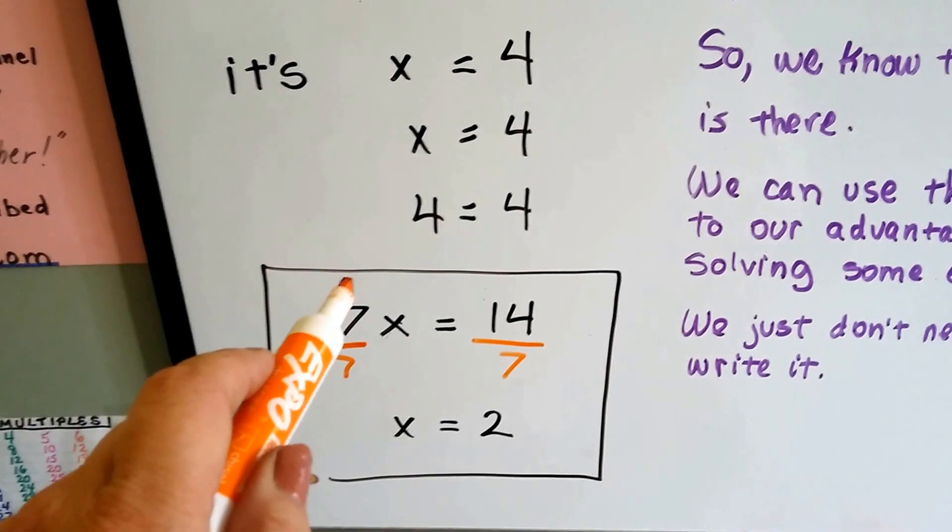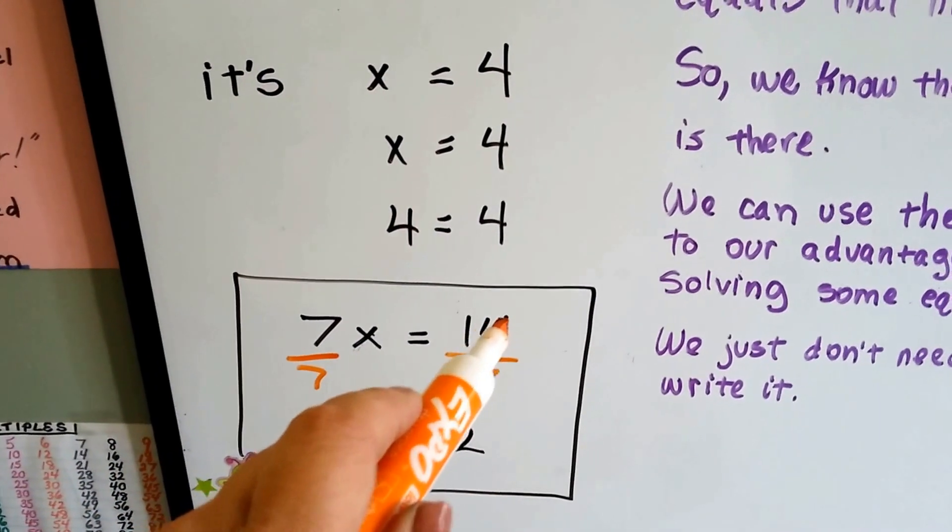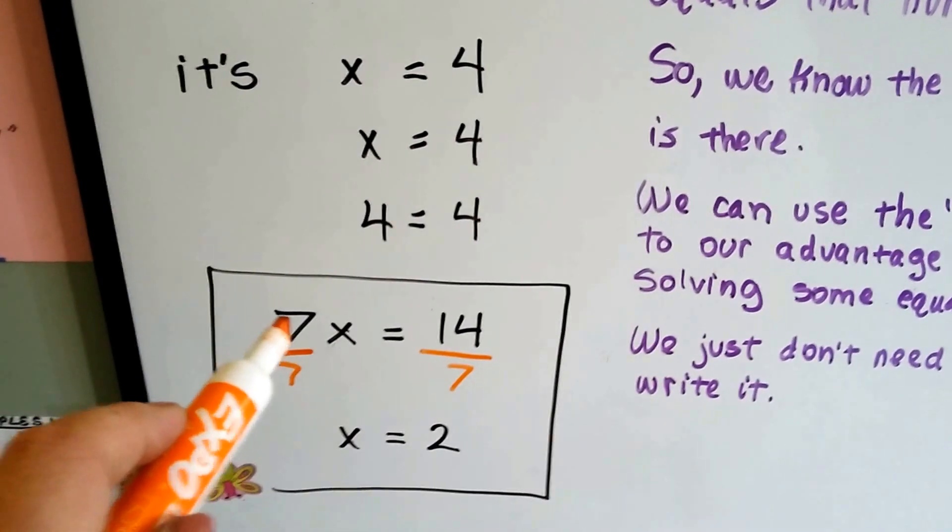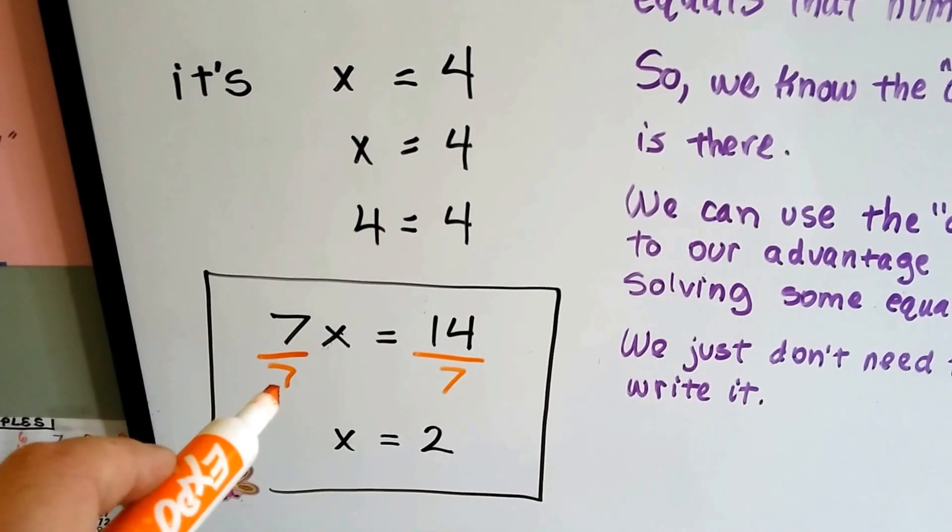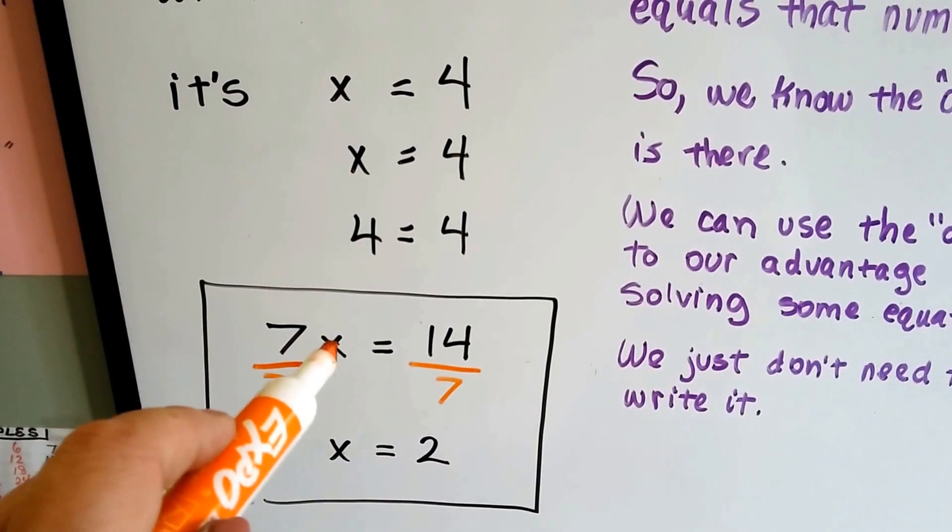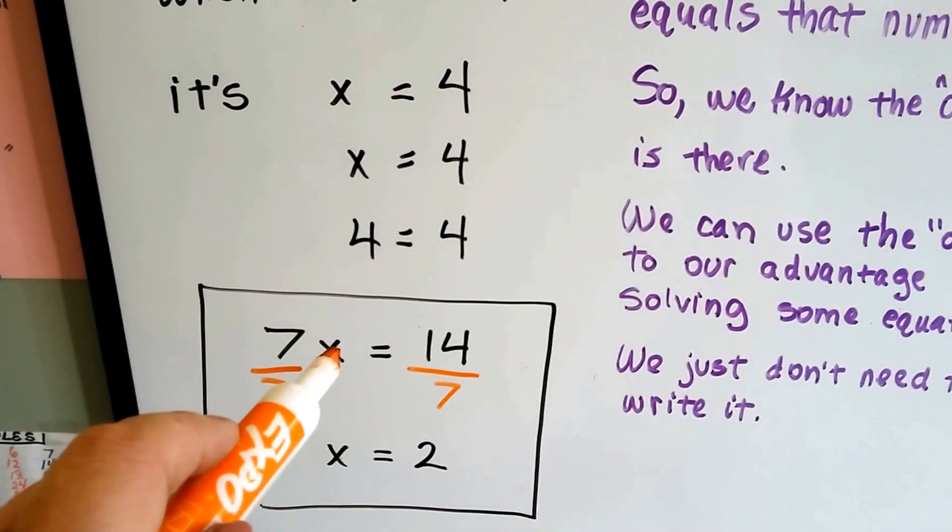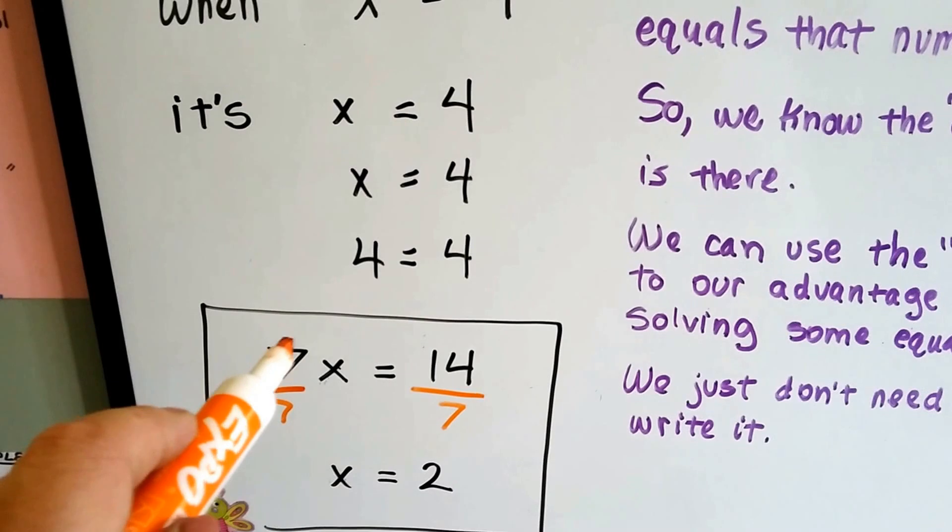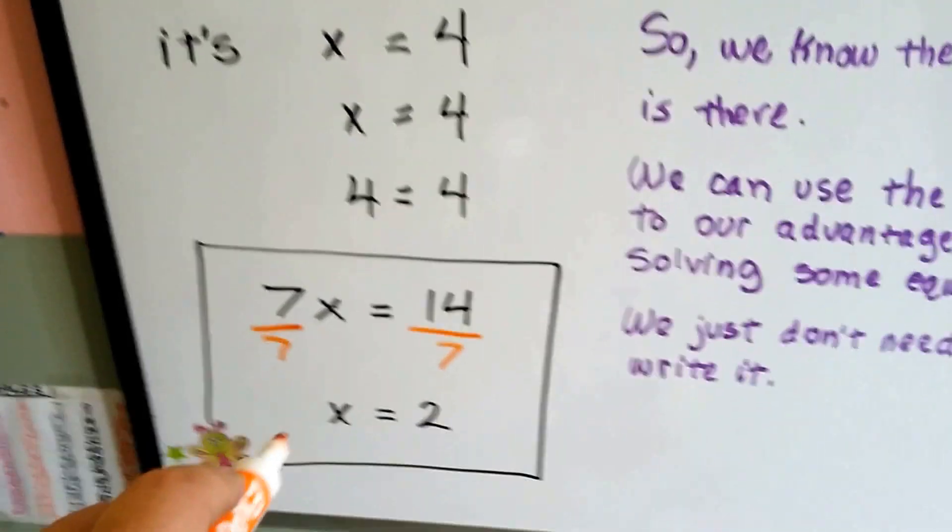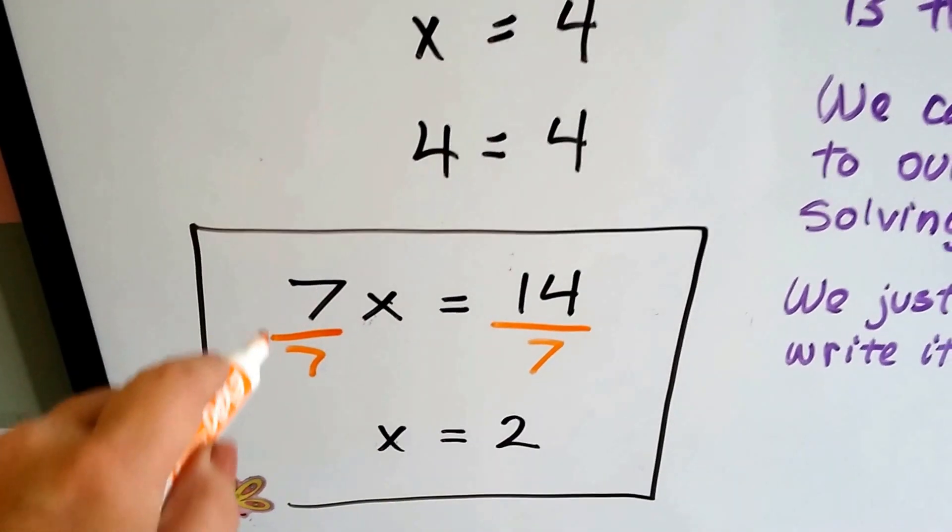But it does help us solve equations. If we have 7x equals 14, as we learned in the last video, this is multiplication, and the inverse operation of multiplication is division. So to get this x by itself, to solve for x, to isolate it, we can divide both sides by this 7.